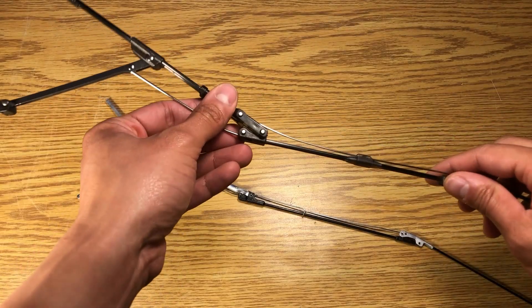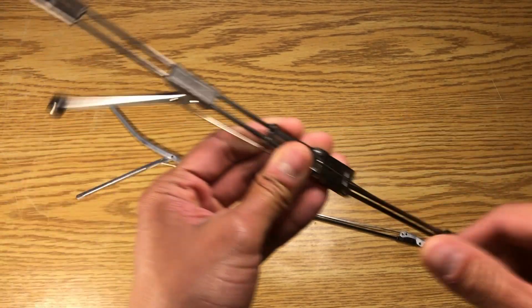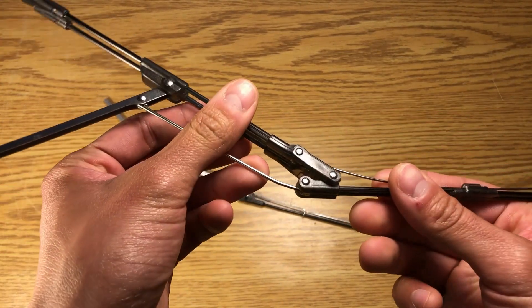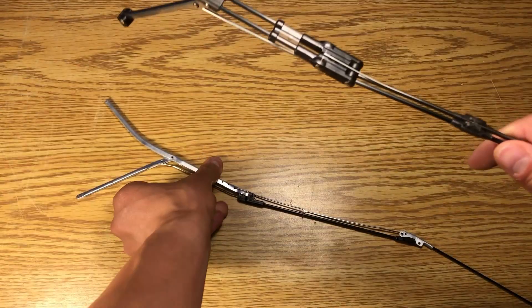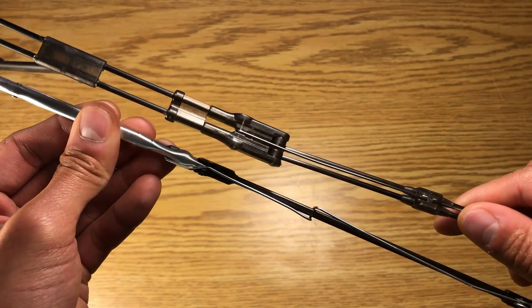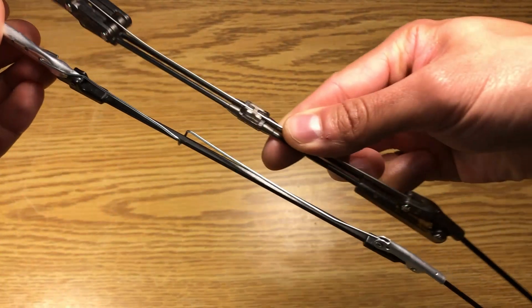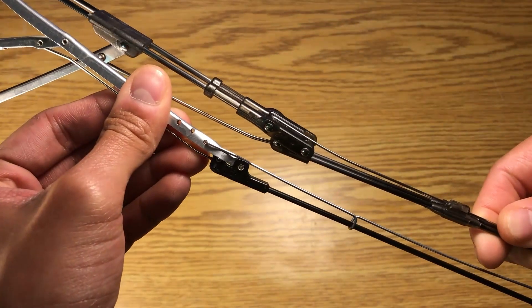Next thing I want to showcase is our super beefy polycarbonate joints. These are over-molded over the carbon fiber and they're ballistic grade polycarbonate. As you can see, compared to our competition, our joints are designed to last. They're almost, I'll say triple the thickness.